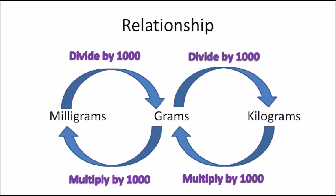If you go back from kilograms to grams, you multiply by 1000, because one kilogram makes up 1000 grams. And one gram makes 1000 milligrams, so going back from grams to milligrams you again multiply by 1000. That's the relationship these three units of measurement have.